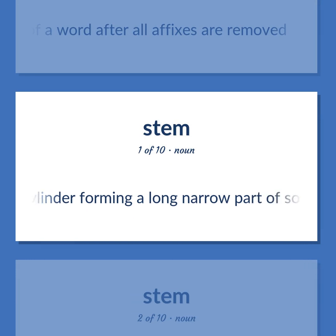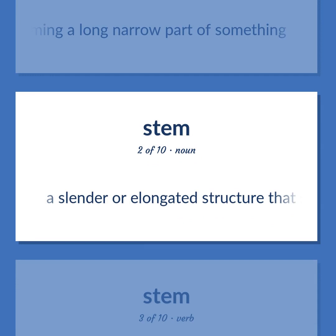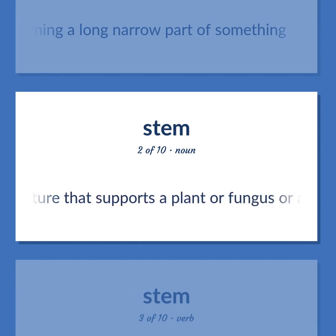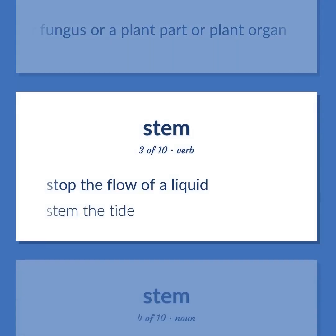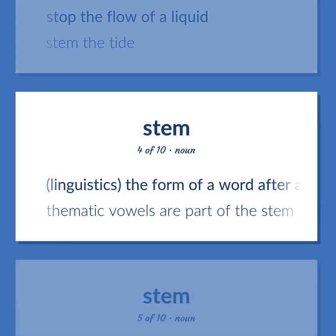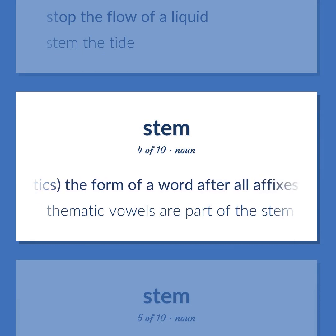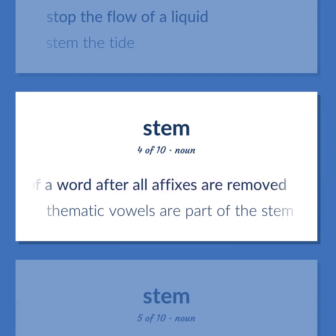Stem. Cylinder forming a long narrow part of something. A slender or elongated structure that supports a plant or fungus or a plant part or plant organ. Stop the flow of a liquid. Stem the tide. Linguistics: the form of a word after all affixes are removed. Thematic vowels are part of the stem.